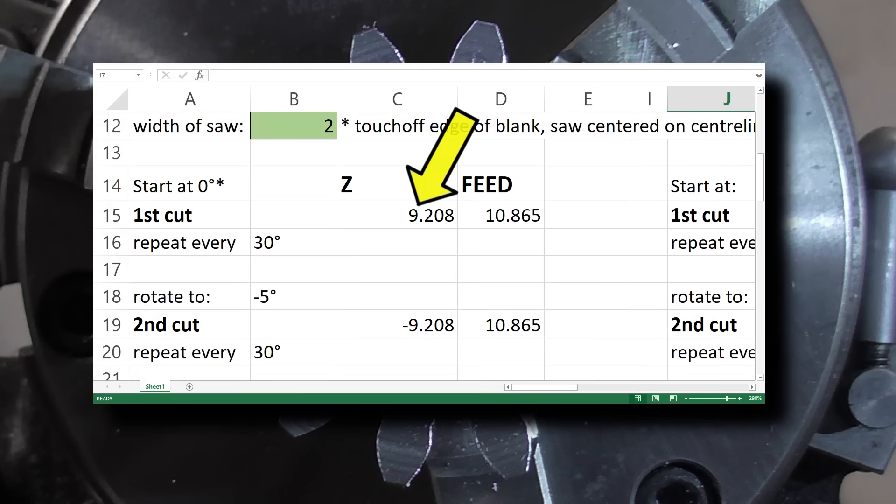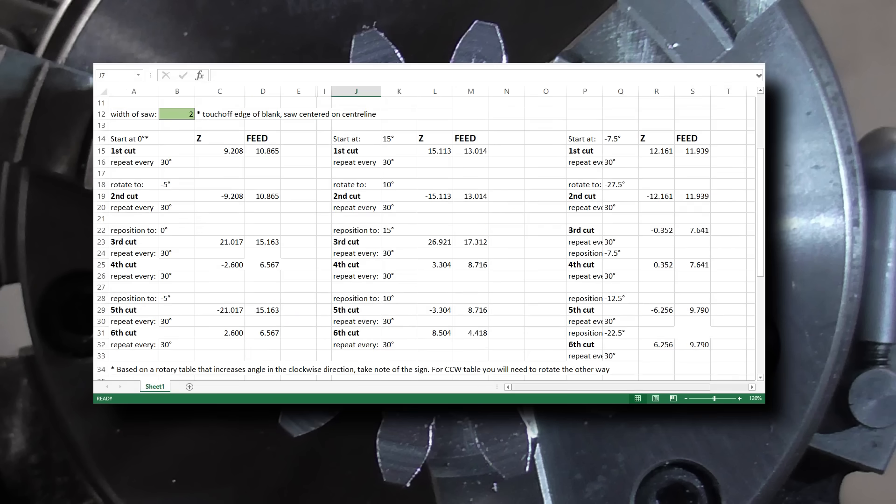Displayed here is the height to set the z-axis and the distance to feed in the saw. Note that not all of these cuts will actually intersect with the blank. The first three pairs of cuts you saw me make are the first ones in each column, in this order.